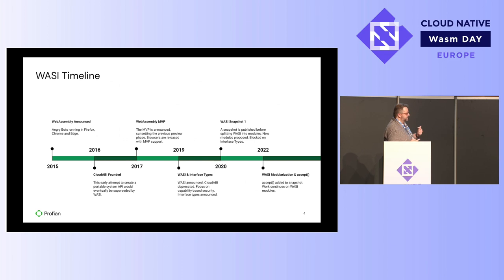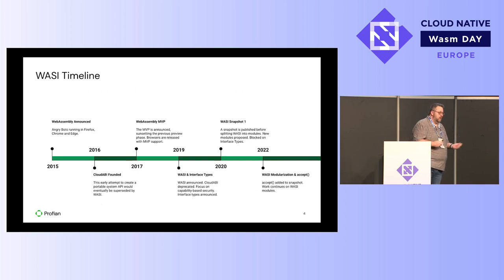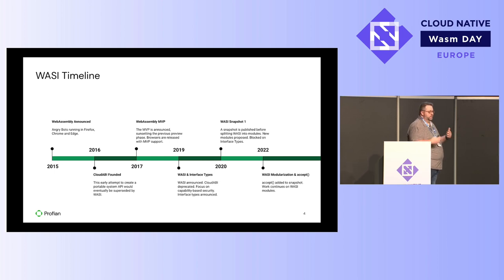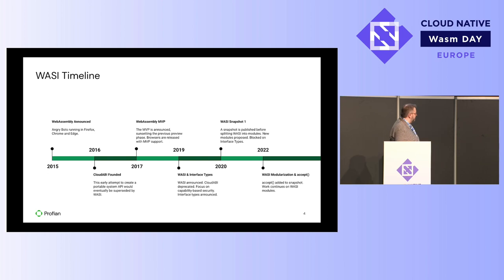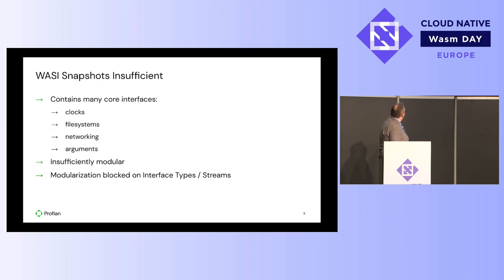We're trying to drive this effort on modularization, which is really important because there are a lot of environments that could use WebAssembly but may not be able to expose all of the interfaces available under WASI. So we want to divide up the WASI specification into multiple different modules so that platforms can support only the APIs that they are able to support. We added the Accept call this last year to Snapshot 1.